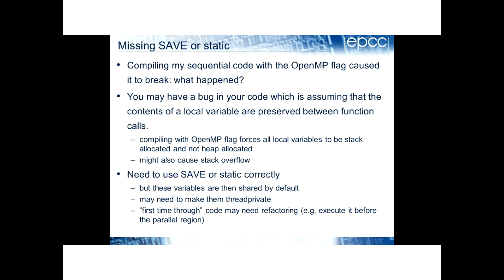To handle this, you need to use the static or save language construct appropriately — but those variables will then be shared by default, which probably isn't what you want, so you may need to make them threadprivate. One common use case is first-time-through code: if this is the first time this function has been called, do something, and then assume the variable holds that value forever. That kind of code causes problems with OpenMP and may need to be refactored.